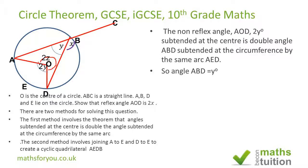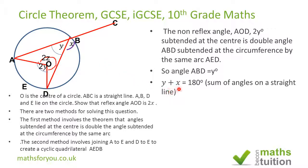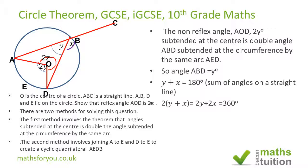We know that the angles on a straight line add up to 180 degrees, so this angle plus that angle gives us 180 degrees. If we now double the left-hand side, we must also double the right-hand side. So doubling gives us 2(Y + X), and when you expand the bracket you have 2Y + 2X, which equals 360 degrees.